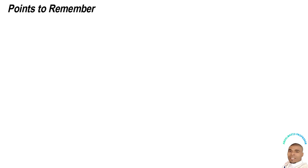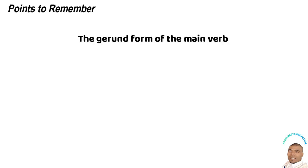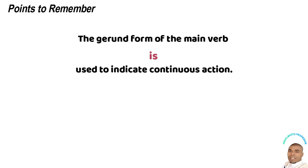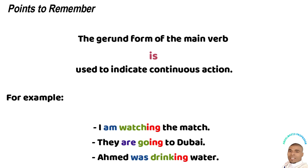Another rule to remember: when using the form of 'to be', make sure you use the verb plus the '-ing' form, as they are used to indicate continuous action. For example: 'I'm watching the match.' 'They are going to Dubai.' 'Ahmad was drinking water.'